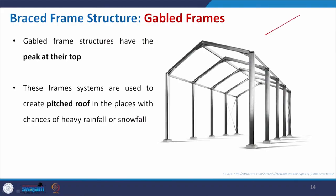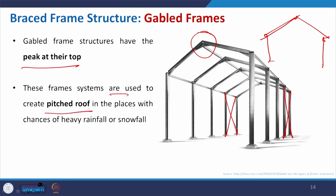The gable framed structure — in this case the gable thing where you have a reach — the frame has a little bit of height. Gable frame structure has a peak at the top. Here you can see how it is connected, and at the same time in order to protect it from lateral force, you can identify that these are actually braced with the members. These frame systems are used to create pitched roofs in places where there is heavy rainfall and snowfall.